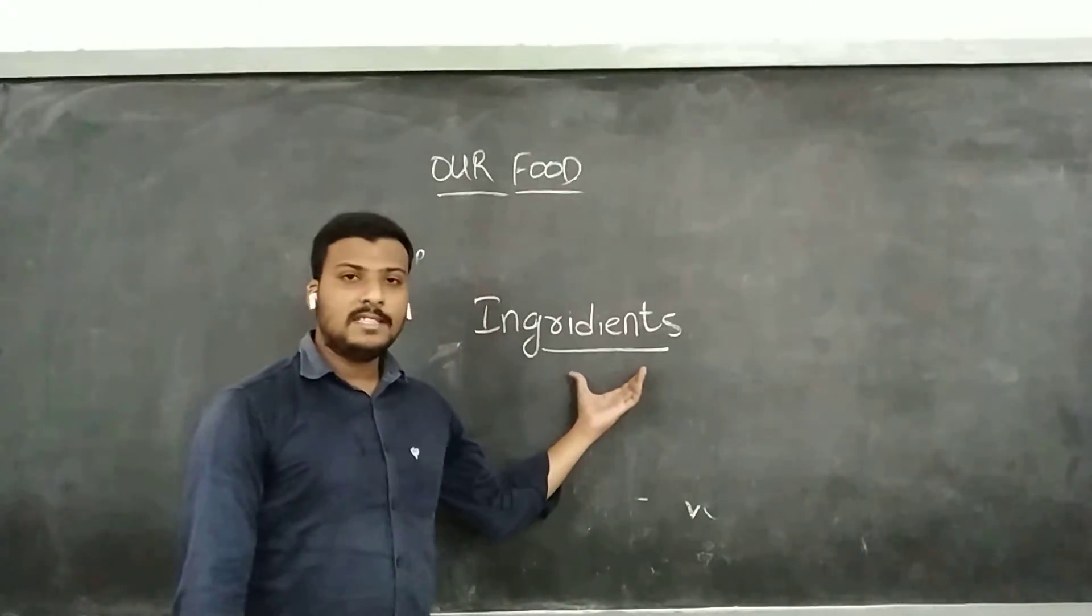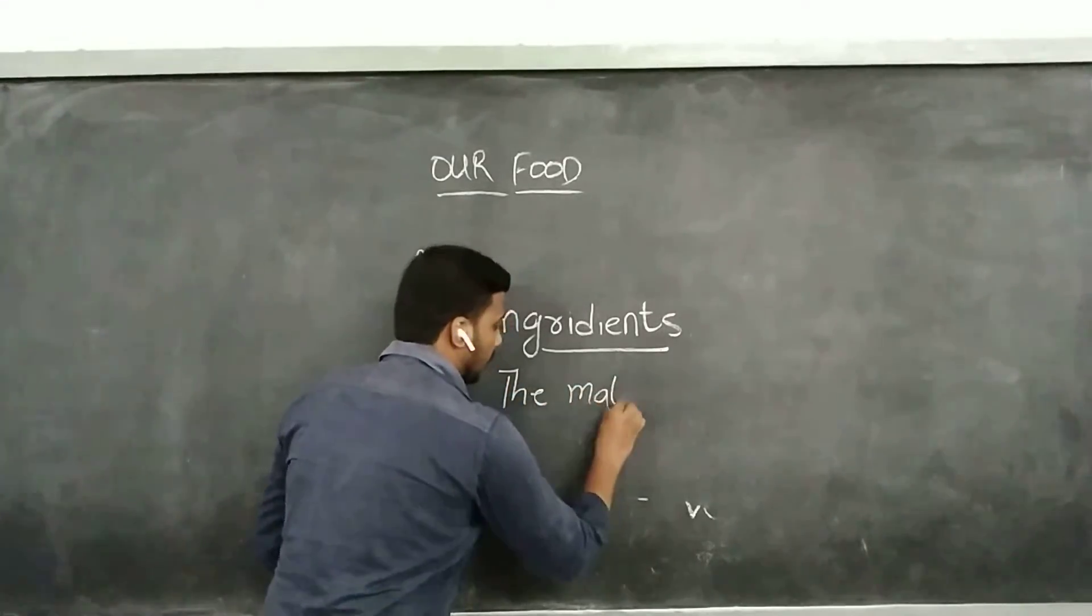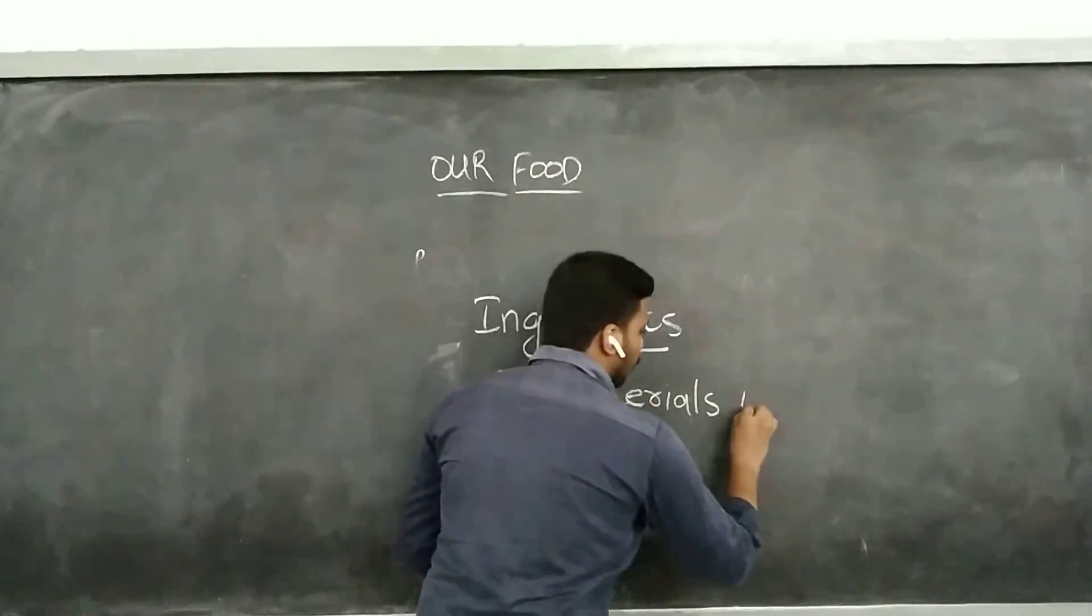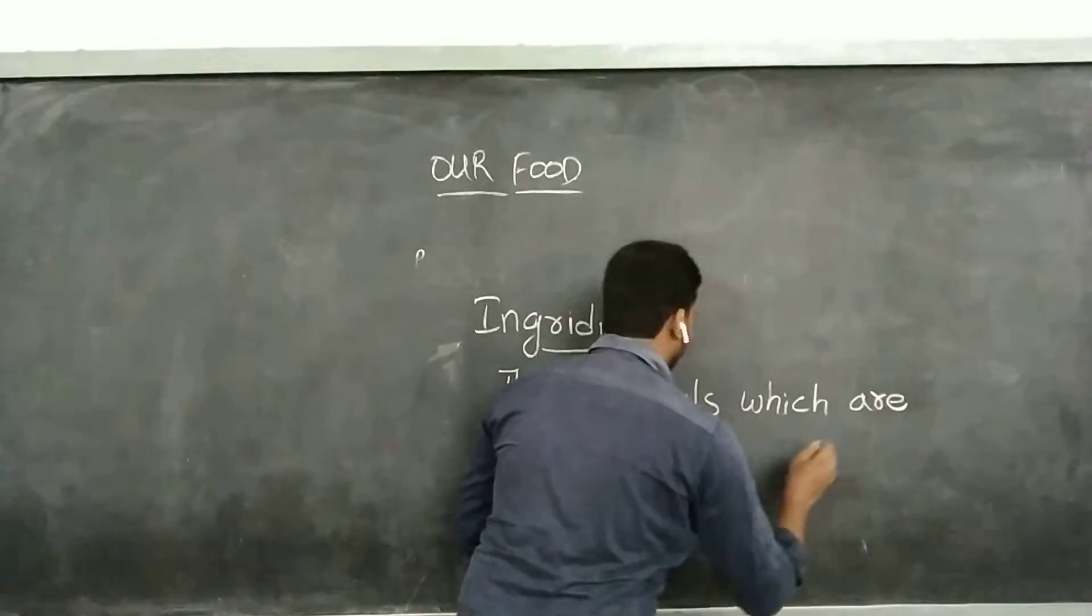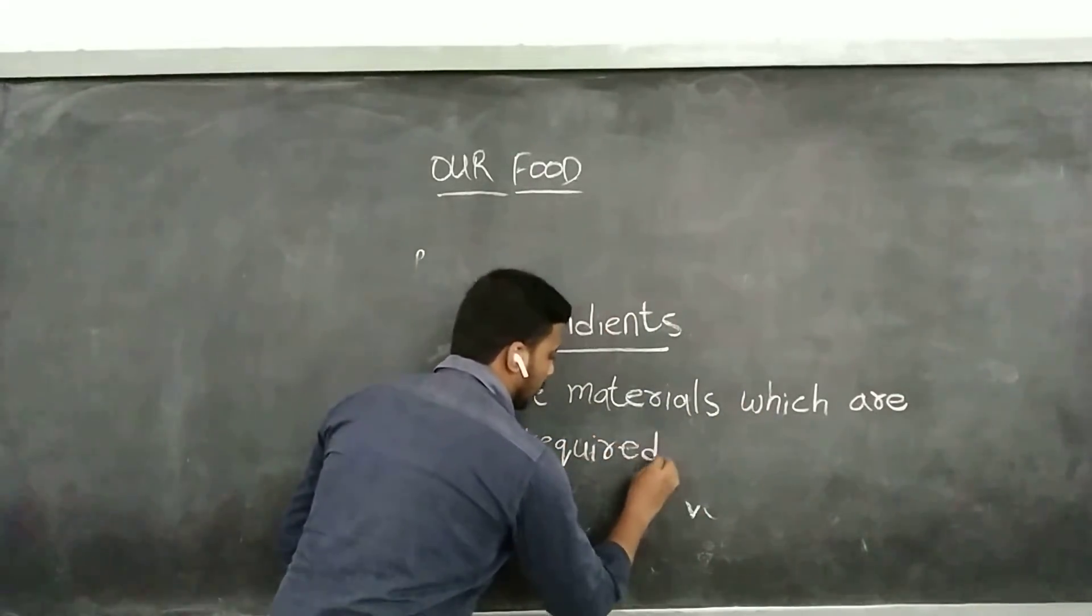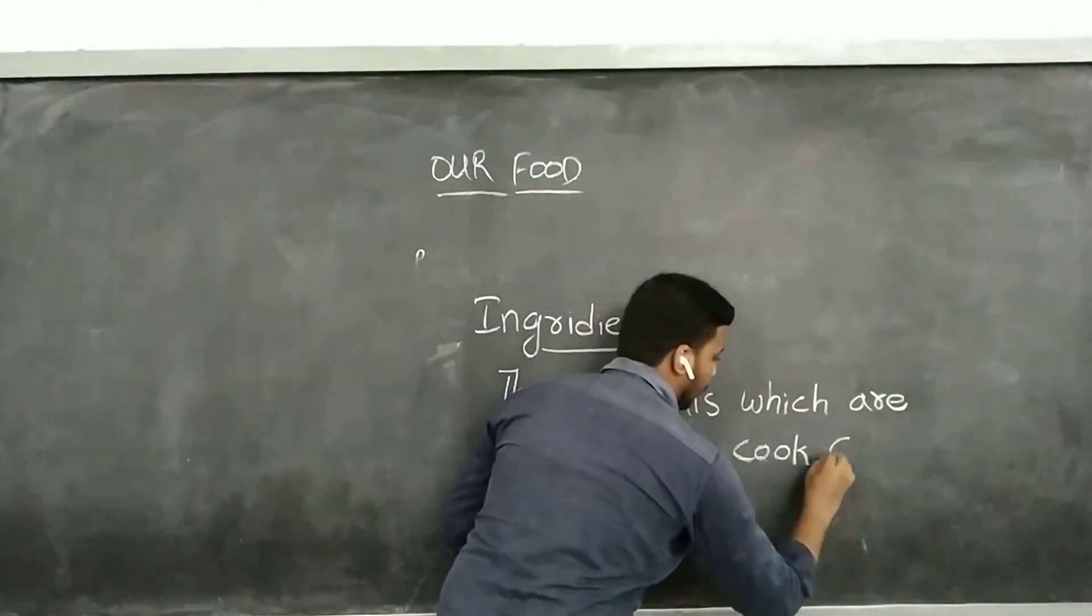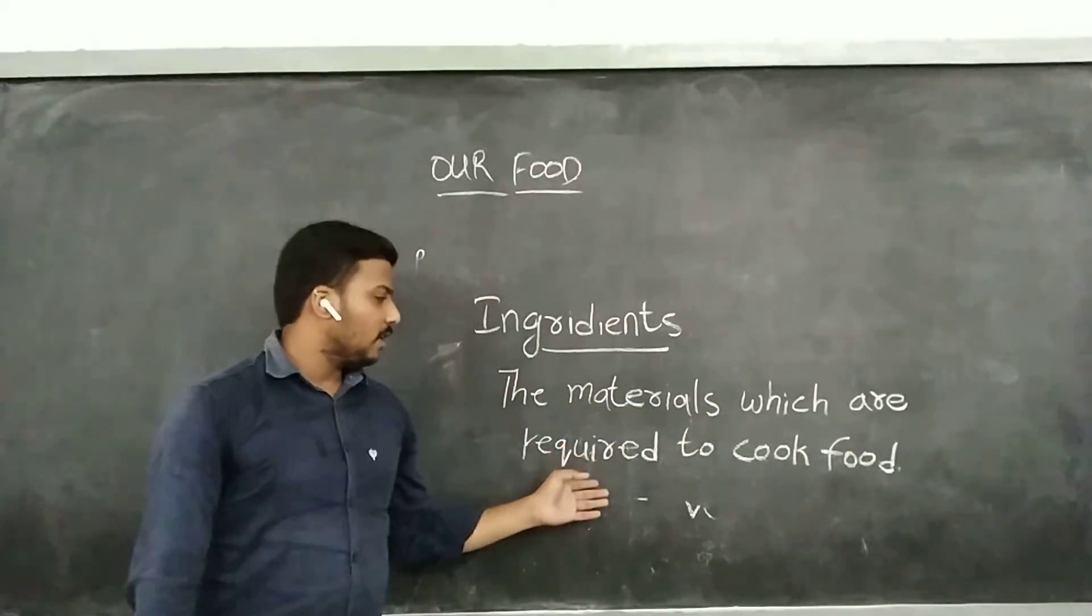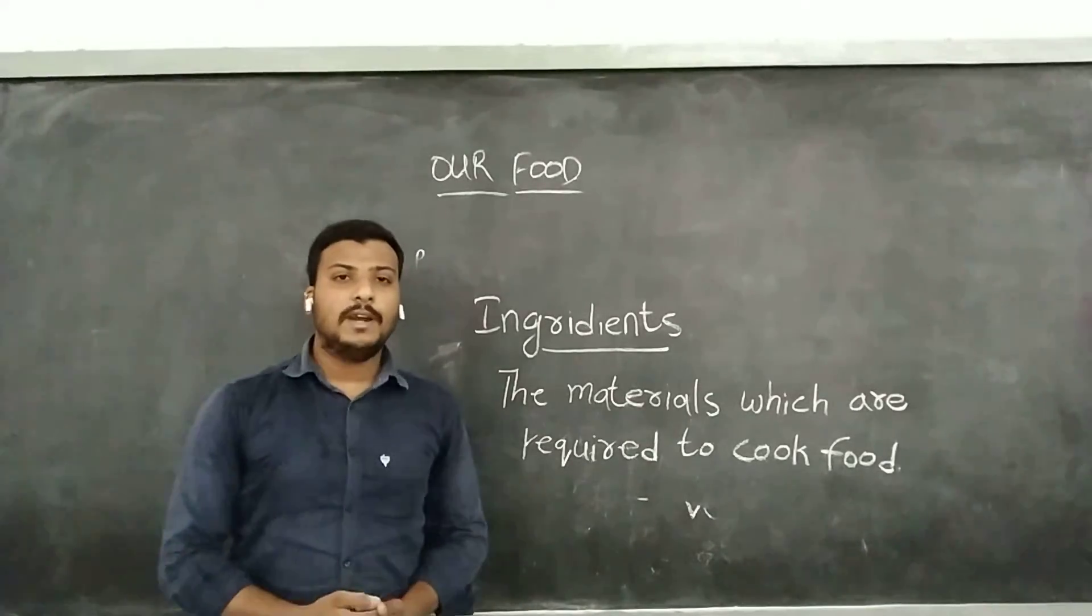Right now we will see what is ingredients in clear. The materials which are required to cook food. Ingredients means the materials which are required to cook food. If I want to prepare jalebi, I need the materials that are required for the jalebi.